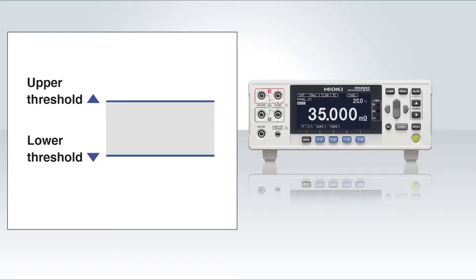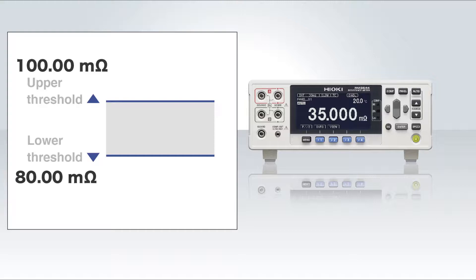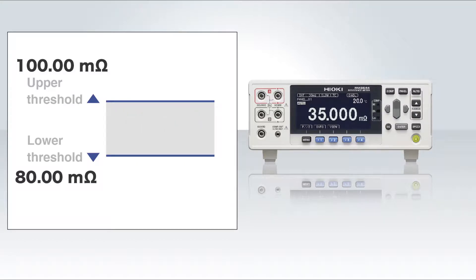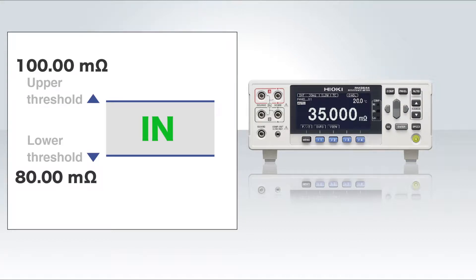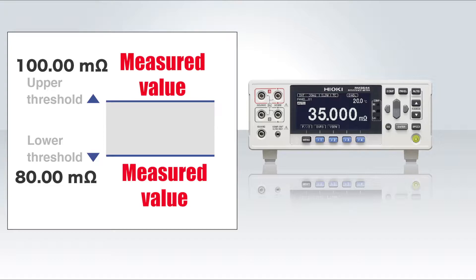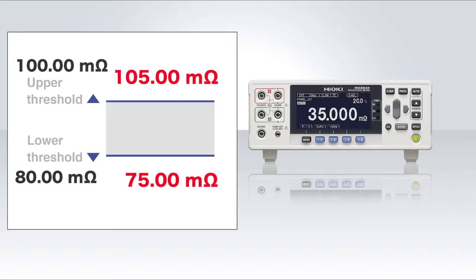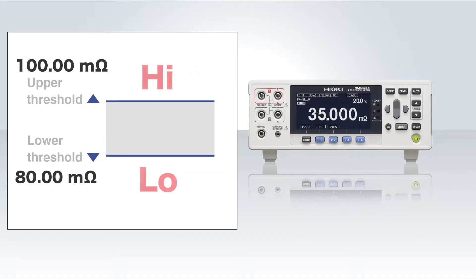The comparator function on the RM3544 lets you set upper and lower resistance thresholds and automatically compares the measured resistance with those thresholds. If the measured value is within the thresholds, the decision will be IN. If the measured value exceeds the thresholds, the decision will be either HIGH or LOW.